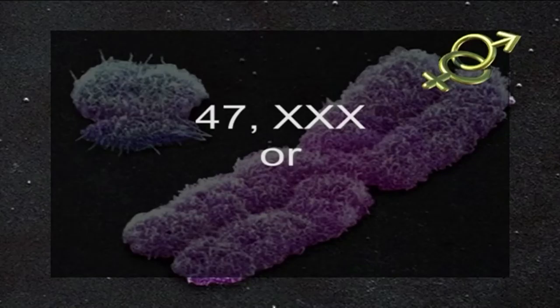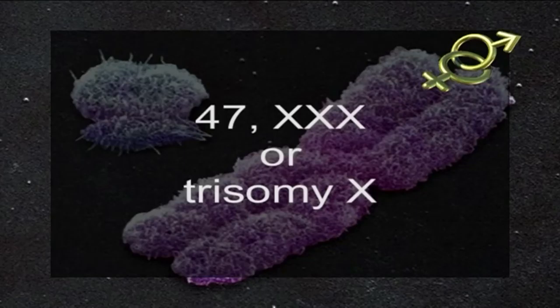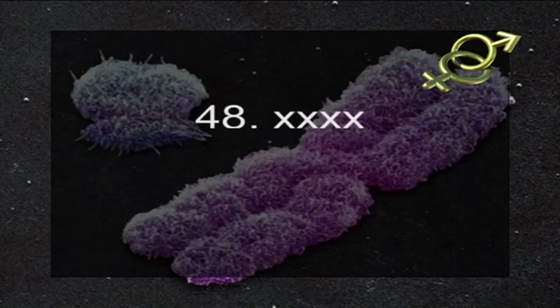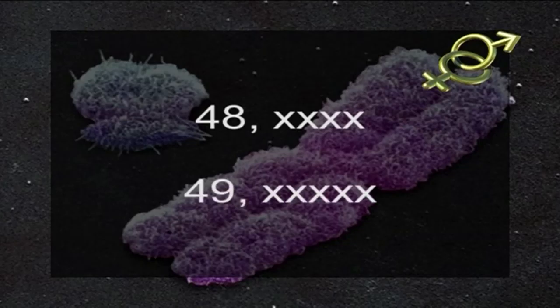Triple X syndrome, also called 47 XXX or trisomy X, is caused due to an extra copy of the X chromosome in females. Females with trisomy X have three X chromosomes for a total of 47 chromosomes per cell. Their stature on average is taller than normal females. They are fertile and their children do not inherit the condition. Females with more than one extra copy of the X chromosome — 48 XXXX syndrome or 49 XXXXX syndrome — have been identified but these conditions are rare.